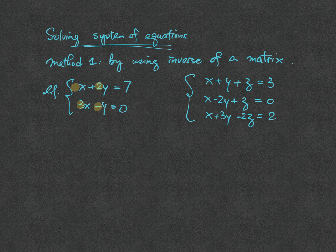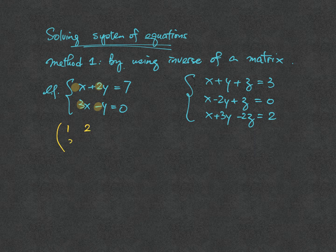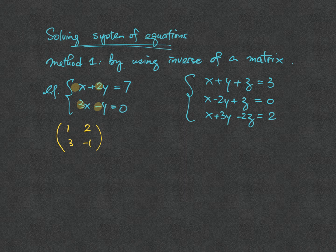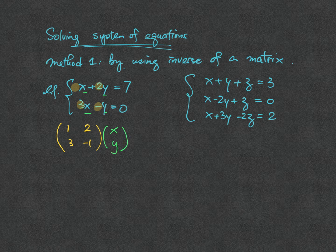If we present it in a square matrix, it should be written as 1, 2, 3, minus 1. In order to put these coefficients together with x and y, we can also put our column matrix x and y next to the square matrix.